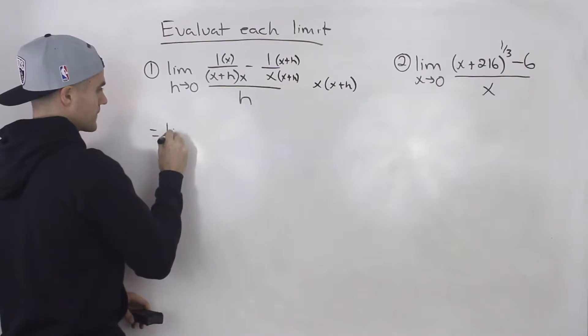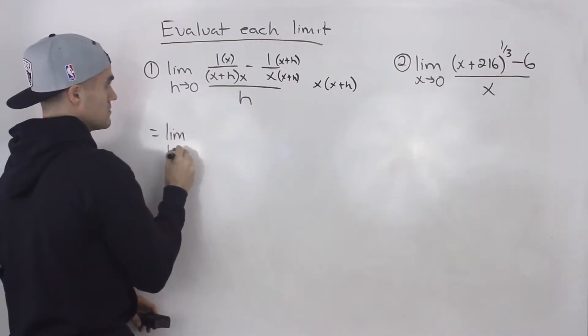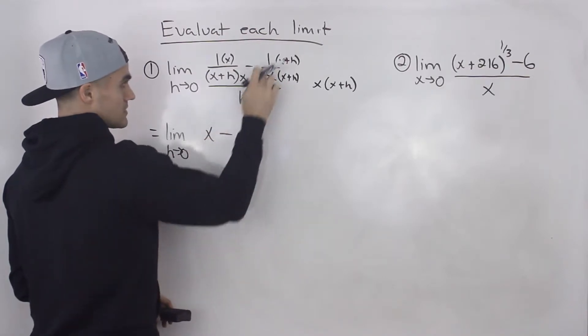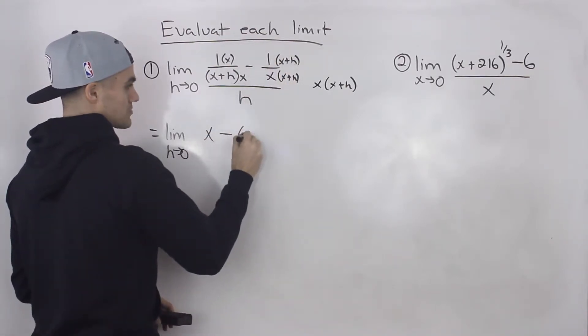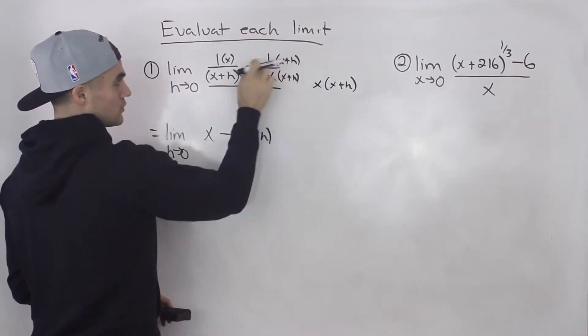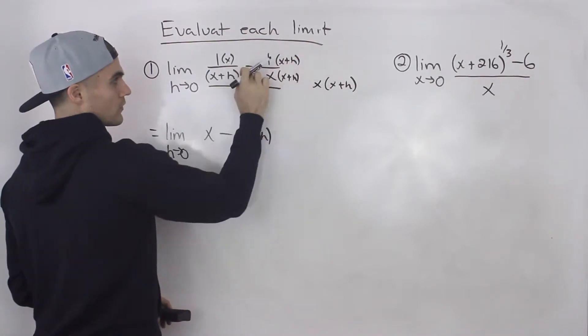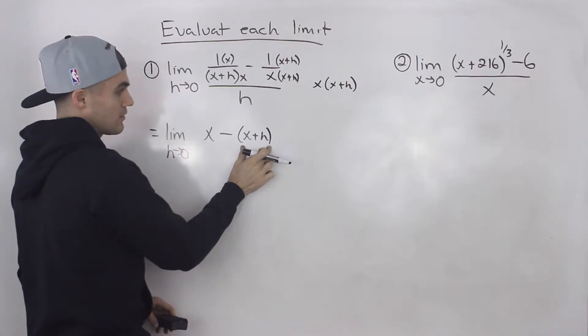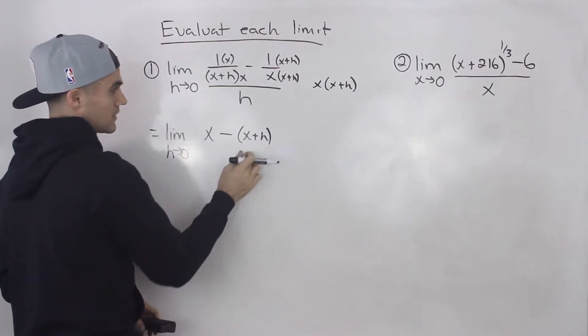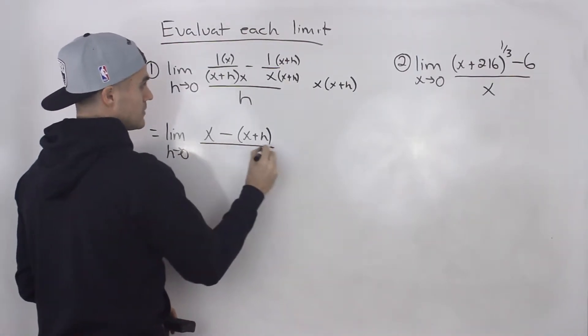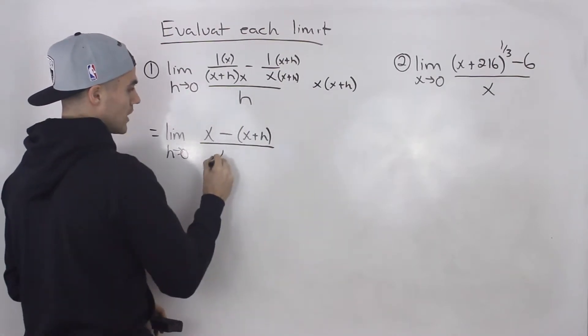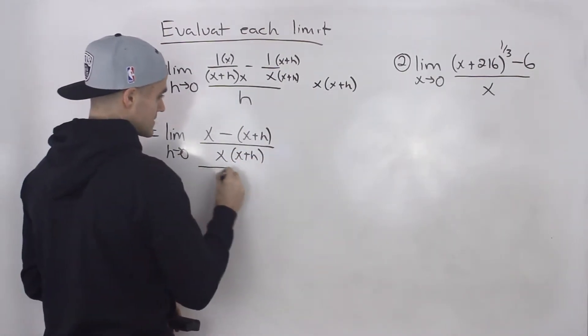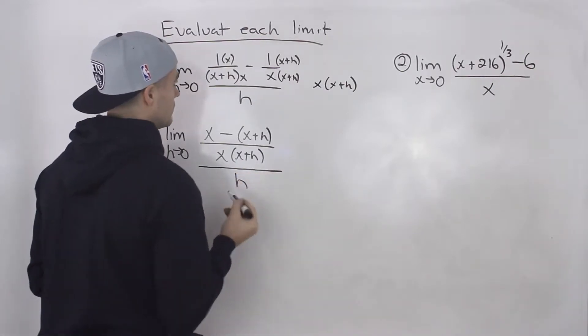So let's rewrite that now. We'll have x minus in brackets x plus h. Be careful with that too. You're subtracting that whole term when there's this subtraction here. So remember to keep that x plus h in brackets. And that's going to be all over that common denominator of x, x plus h. And then that's still going to be all over h.